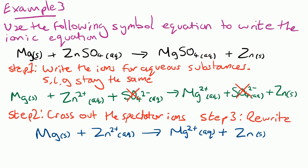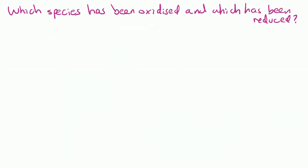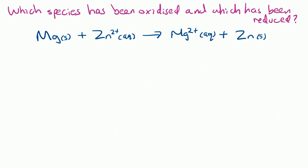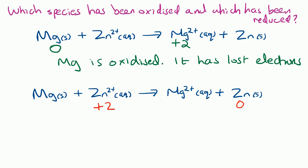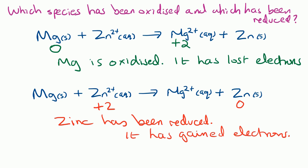If the question asks which species has been oxidized and which has been reduced, we write the oxidation numbers underneath. Magnesium's oxidation number has increased, so it's been oxidized — in terms of electrons that means it's lost electrons: OIL RIG, oxidation is loss of electrons. Zinc has its oxidation number decreased, so zinc has been reduced, and from OIL RIG we know reduction is gain of electrons, so it must have gained electrons. If you like this video, don't forget to click like and subscribe. Thank you for watching.